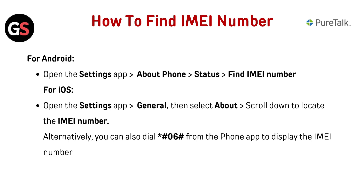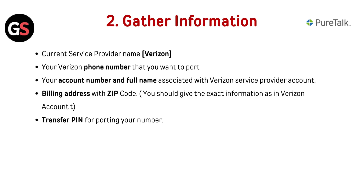Alternatively, you can also dial *#06# from the phone app to display the IMEI number.